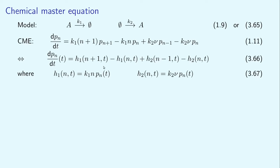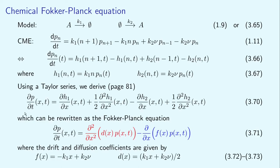Now, if n is large, then 1 is very small compared to n. So we could approximate the first two terms by the derivative of h1 and the second two terms by the derivative of h2. To do this, we have to extend the values of h1 and h2 to non-integer values, so let us assume this is possible by interpolation. Let us assume that h1 and h2 are defined for all real values of the first parameter. Then we can use a Taylor series to approximate the first two terms by the first two derivatives of h1 and the second two terms by the first two derivatives of h2. Therefore, using the Taylor series, we derive equation 3-70.